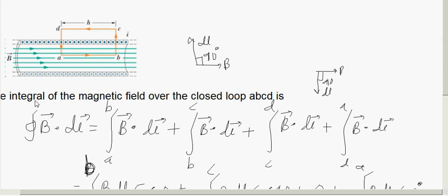So first we found out what is the line integral of the magnetic field over the closed loop A, B, C, D. So you divided the whole loop into four sections.